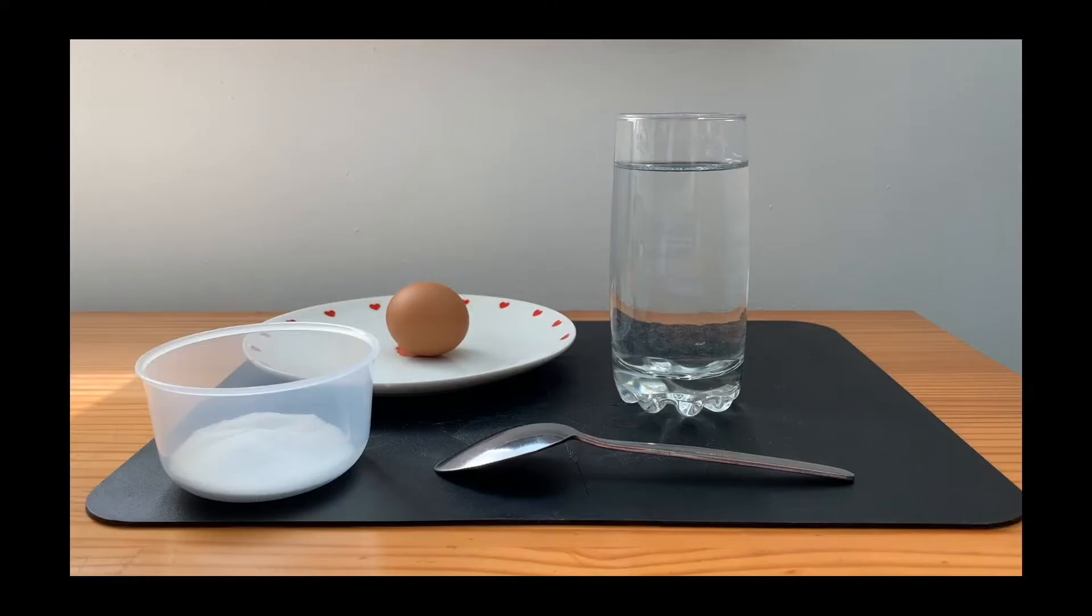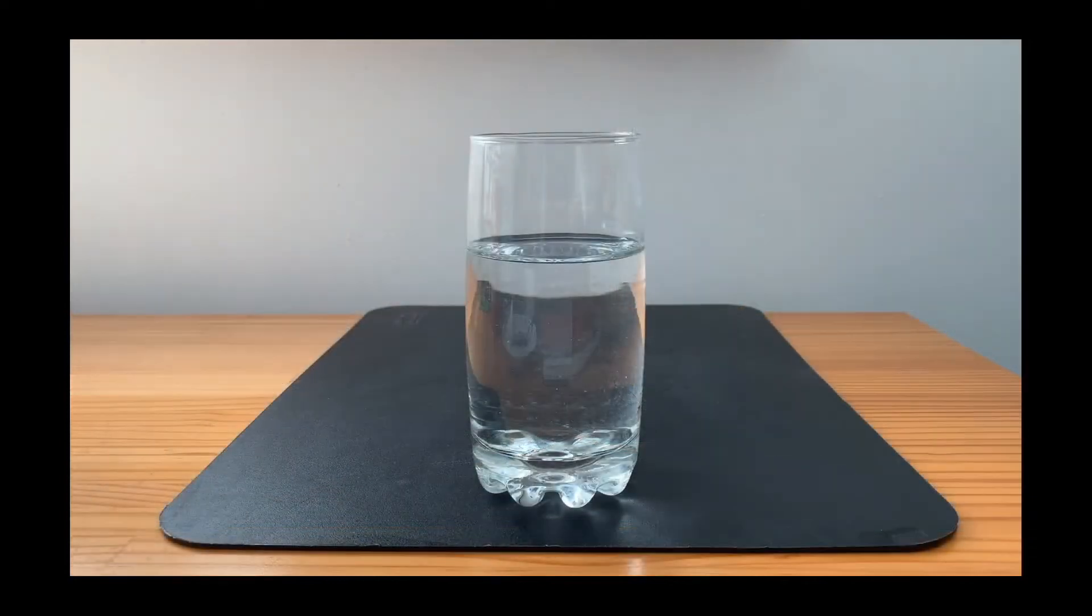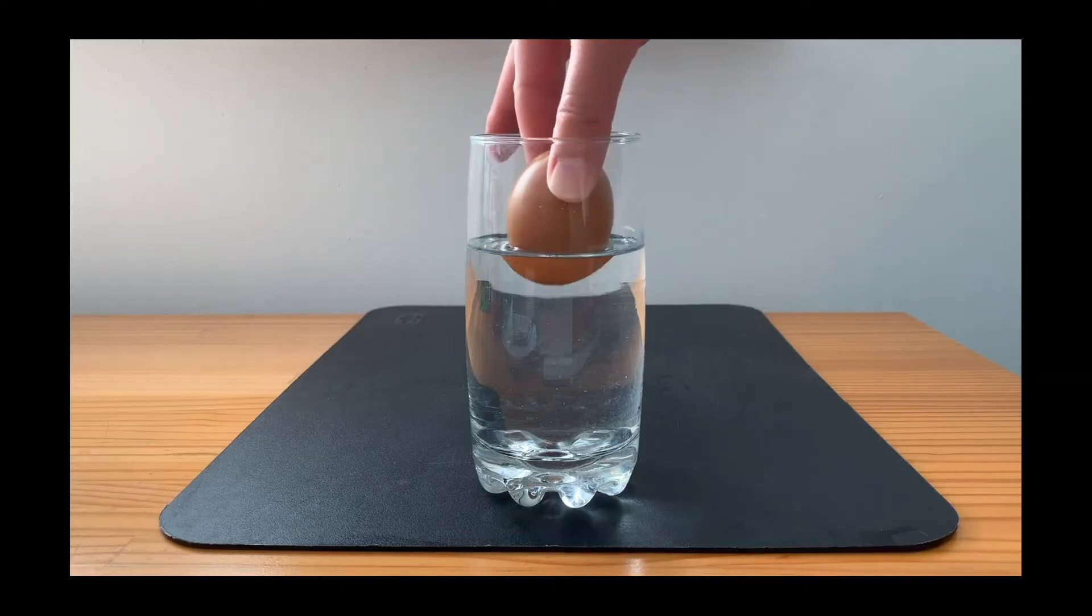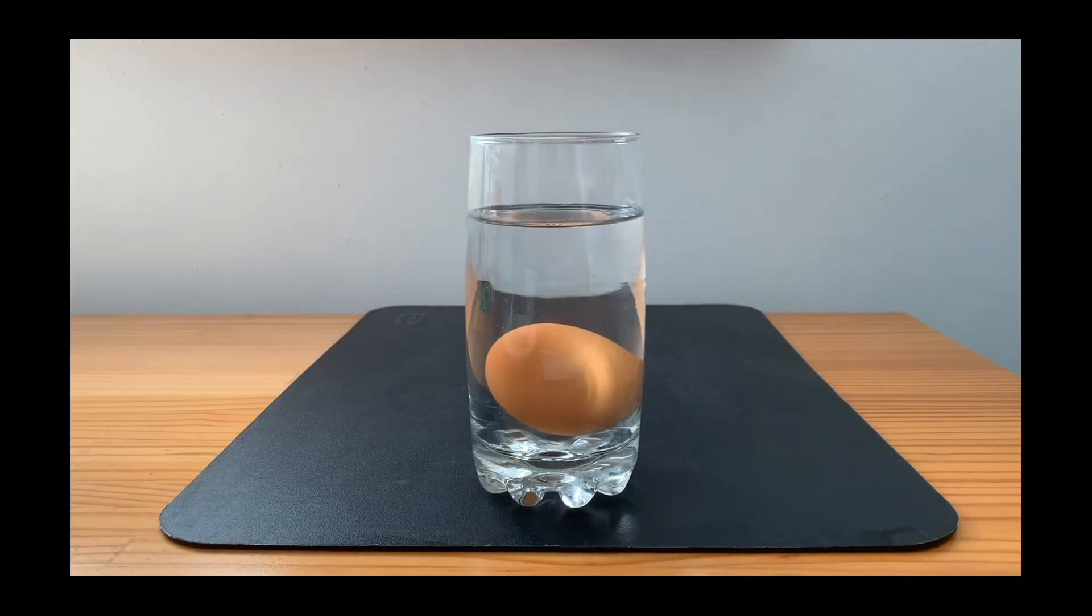For this experiment you'll need a glass filled with 250 milliliters of tap water, one fresh uncooked egg still in its shell, and we'll also be using some table salt. Add the egg to the glass of water and watch as the egg sinks to the bottom of the glass.